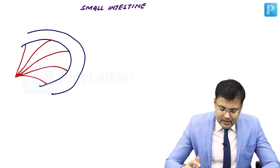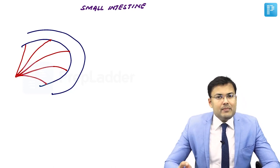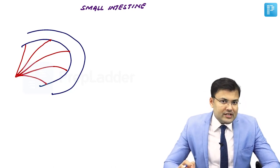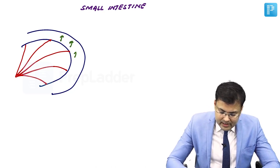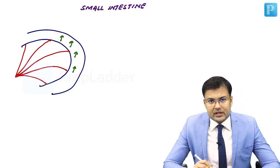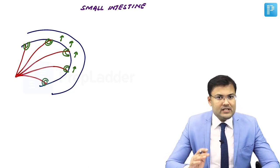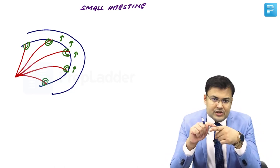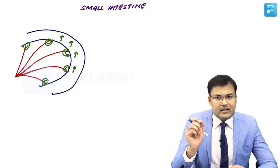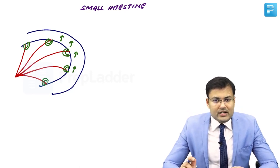The lymphovascular supply is in the submucosa. Now in this bowel, this is the mesentery and these are the nutrient arteries. Imagine a patient who has constipation — because of constipation there is increased pressure in the lumen, and because of that increased pressure there is herniation of mucosa and submucosa. The site which is weakest is the site of penetration of nutrient arteries, and from this site there is herniation of mucosa and submucosa.